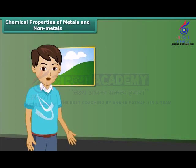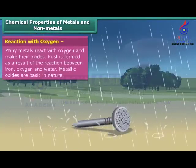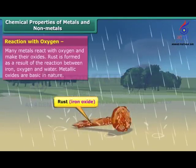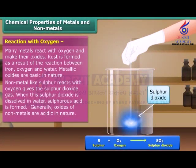Friends, after discussing the physical properties of metals and non-metals, let's know about their chemical properties. Metals like iron, copper, magnesium, etc. react with oxygen and make their oxides. These oxides are basic in nature. Now we talk about the non-metals. Sulfur reacts with oxygen, giving the sulfur dioxide gas. Oxides of non-metals are acidic in nature.